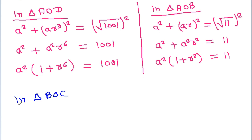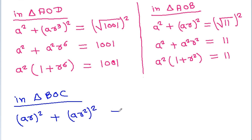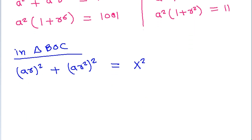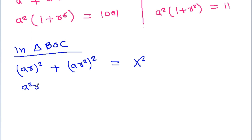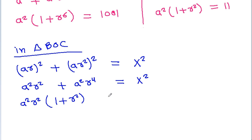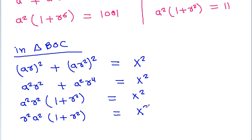In triangle BOC, we get (ar)² + (ar²)² = x². This simplifies to a²r² + a²r⁴ = x², and taking a²r² common gives a²r²(1 + r²) = x².